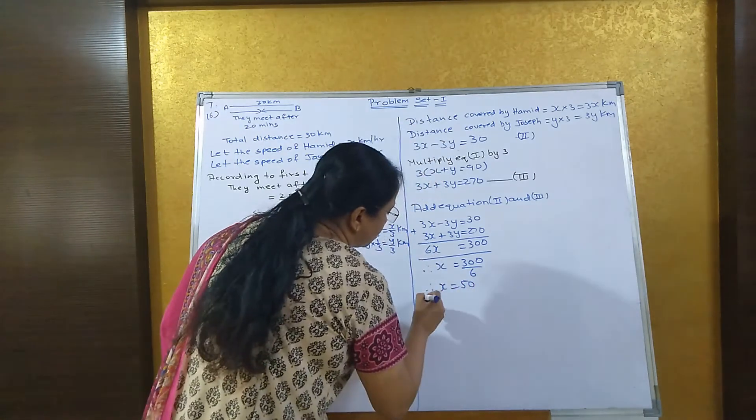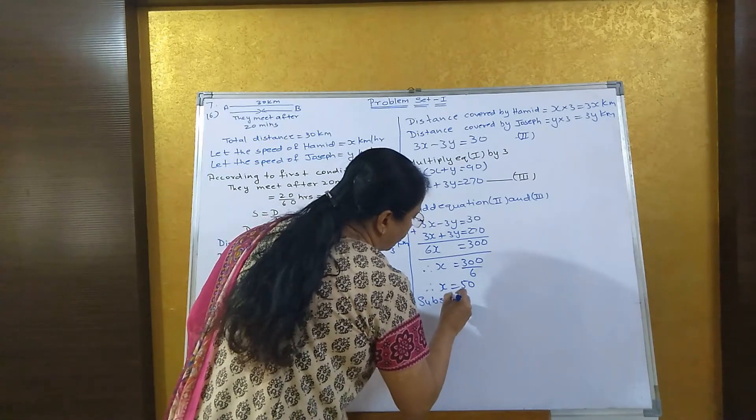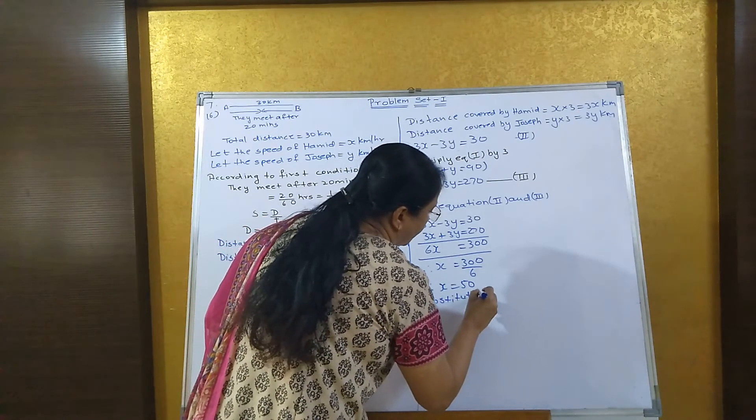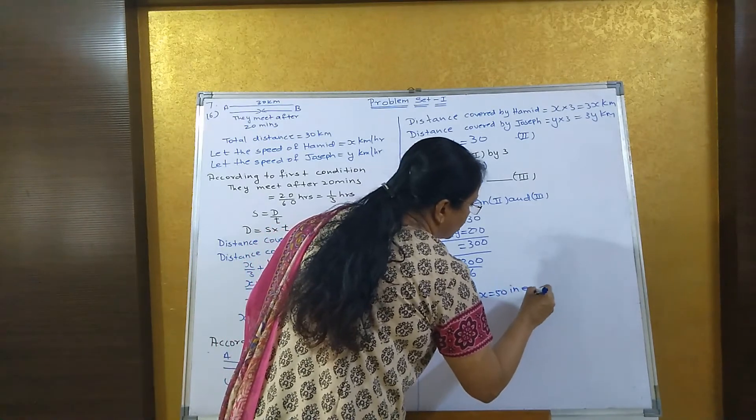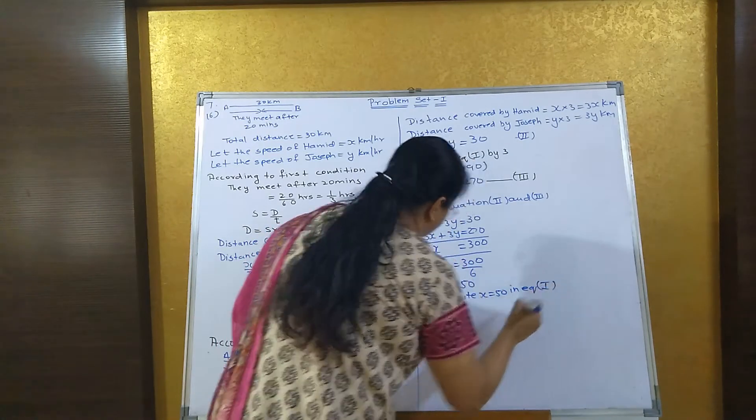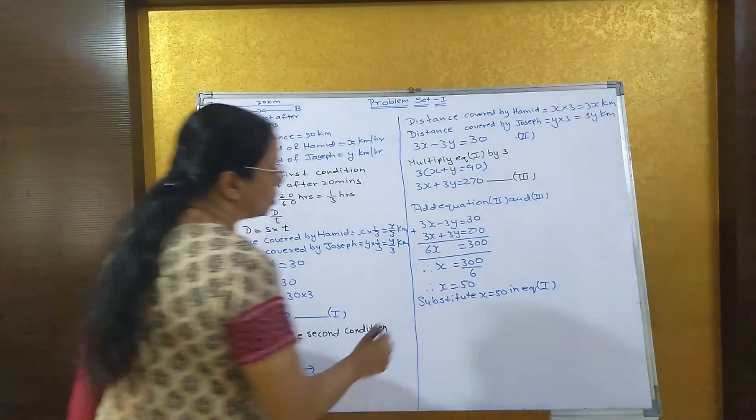Now substitute x equal to 50 in equation 1. What is equation 1? x plus y equals 90.